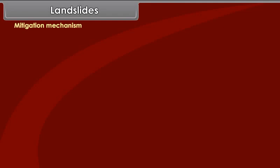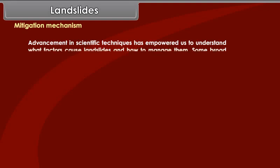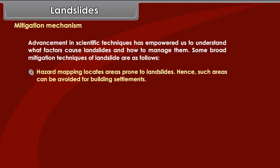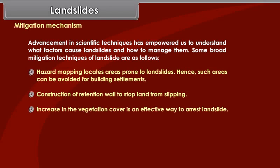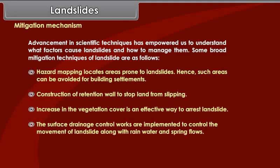Mitigation Mechanism. Advancement in scientific techniques has empowered us to understand what factors cause landslides and how to manage them. Some broad mitigation techniques are as follows: Hazard mapping locates areas prone to landslides, so such areas can be avoided for building settlements. Construction of retention walls to stop land from slipping. Increase in vegetation cover is an effective way to arrest landslides. Surface drainage control works are implemented to control the movement of landslides along with rainwater and spring flows.